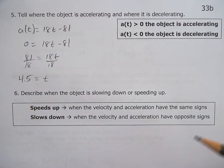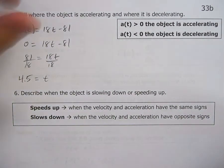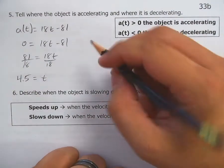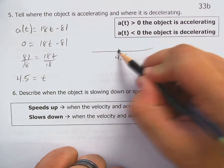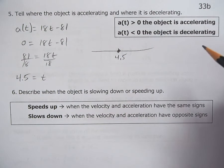And again, had I given you units, you'd place your units there. We don't know if it's minutes, hours, seconds, whatever it is. So at time equals 4.5, your acceleration is zero.